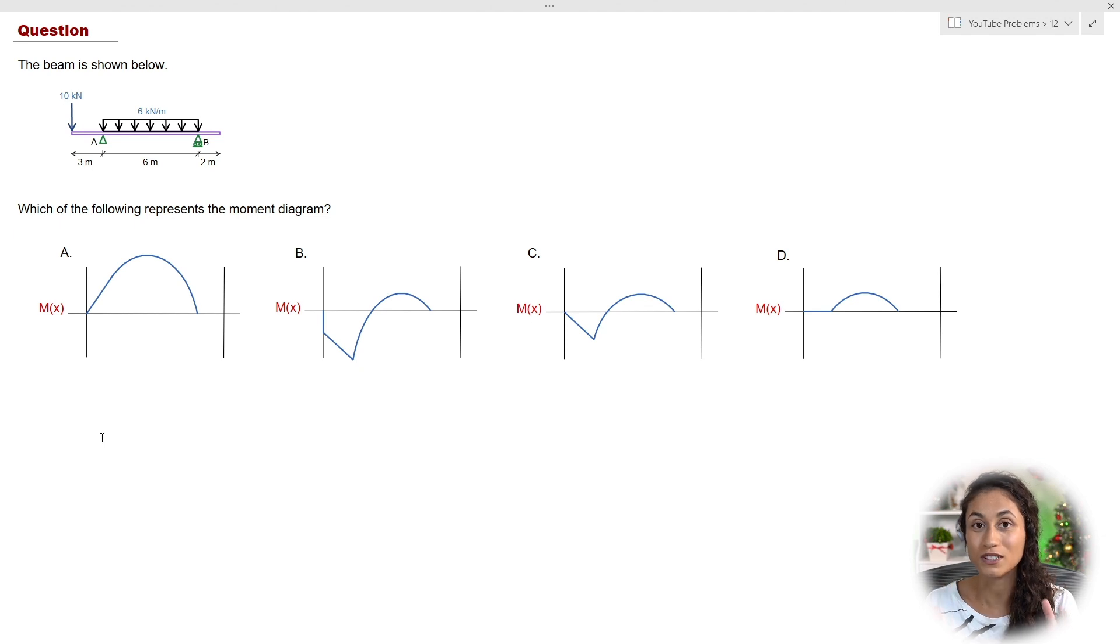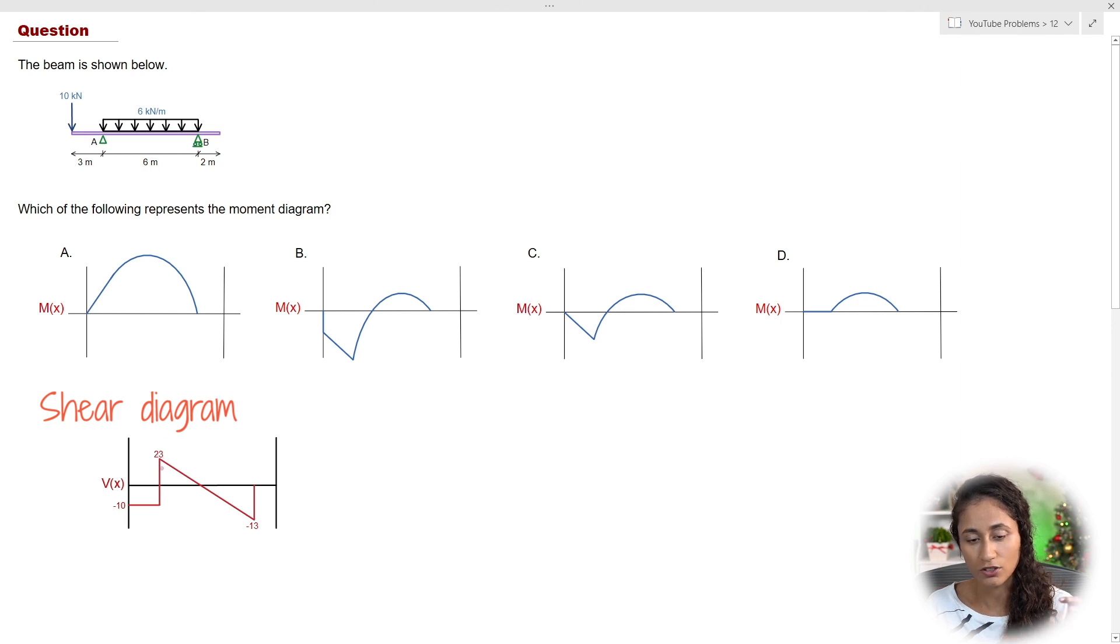Now we already determined the shear diagram in the previous video and if you guys haven't watched that video yet, I will leave the link above. If we take a look at the shear diagram, note how this line here crosses zero. And if you're trying to take the area under this diagram, you're going to need to find this distance here.